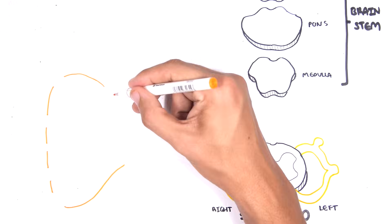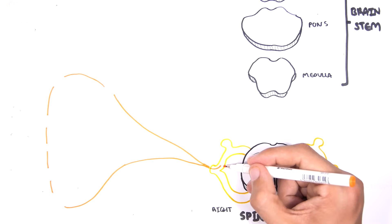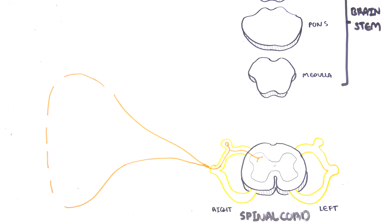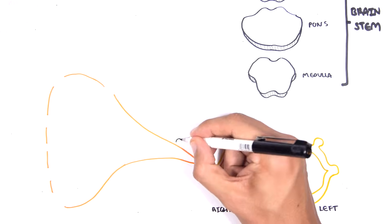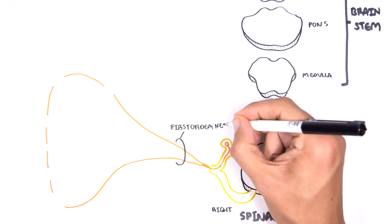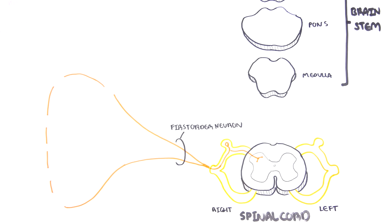Neurons travel into the spinal cord from the dorsal part of the spinal cord. Here in yellow is a first order neuron. This first order neuron is a sensory neuron which brings in information or action potential of pain, temperature, pressure, etc.